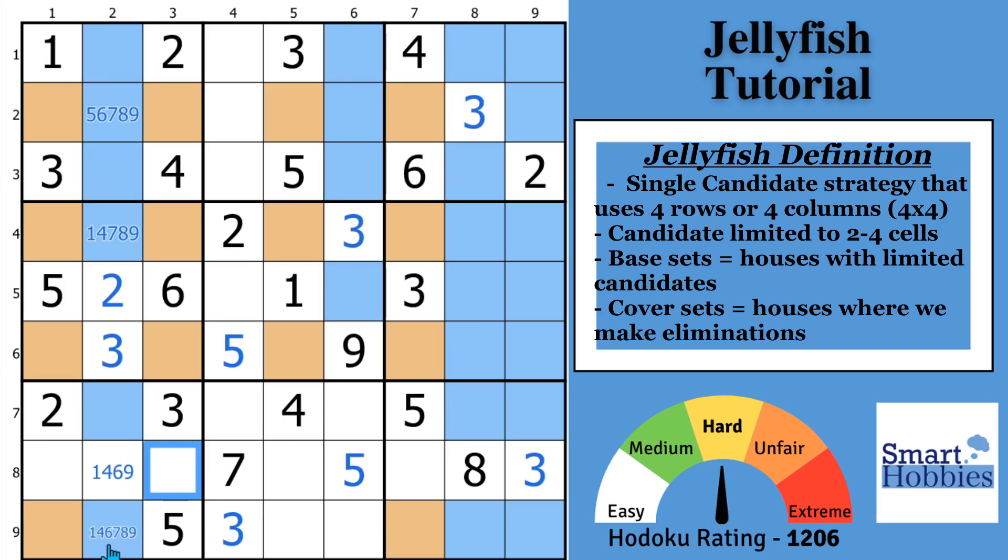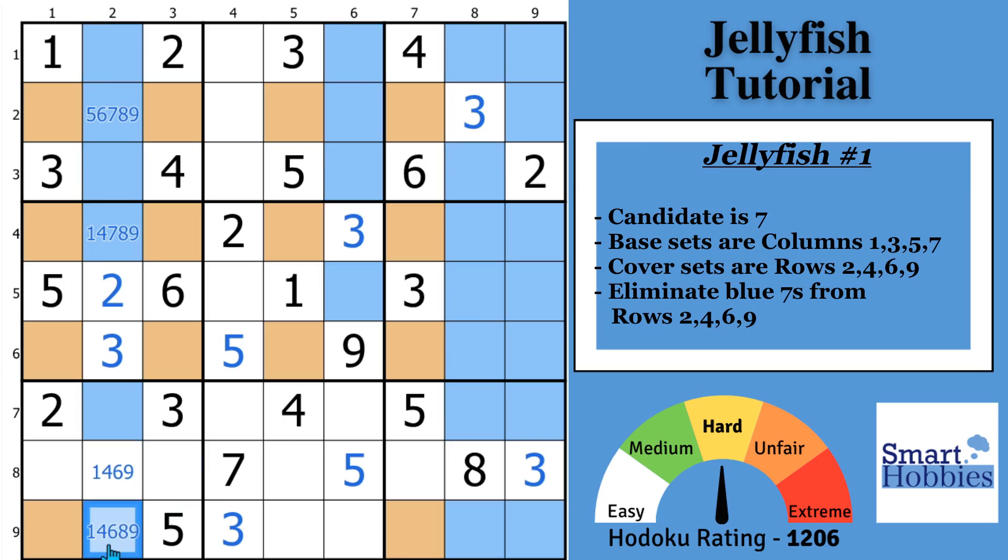And the eliminations are exactly the same in a symmetrical jellyfish. So let's do eliminations here. We know this cannot be a 7 anymore. It can be in those cells. It can't be here. It can't be here. It can't be here. And it can't be here. So I'll eliminate all the blue. We do get to eliminate a 7 from right here and a 7 from right here. But that's how the Sudoku jellyfish eliminations work.